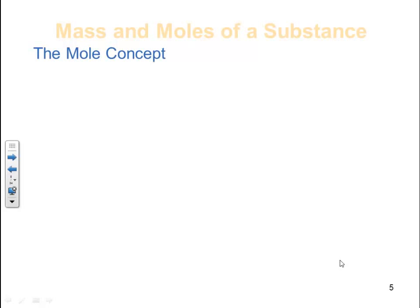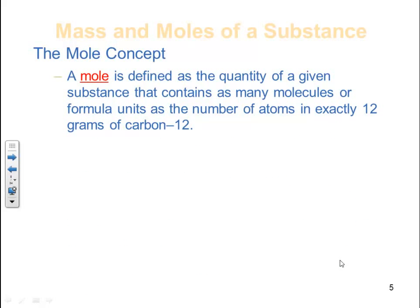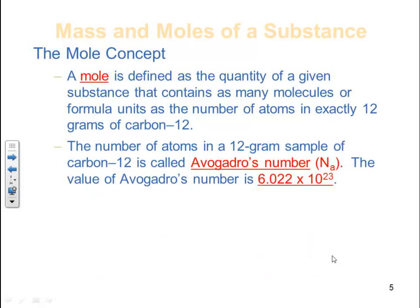The mole allows us to compare species with the same number of atoms, molecules, or formula units but different masses — kind of like having 15 bananas and 15 coconuts: same quantity but different masses. A mole is defined as the quantity of a given substance that contains as many molecules or formula units as the number of atoms in exactly 12 grams of carbon-12. The number of atoms in a 12-gram sample of carbon-12 is called Avogadro's number, symbolized Nₐ, with a value of 6.022 × 10²³.